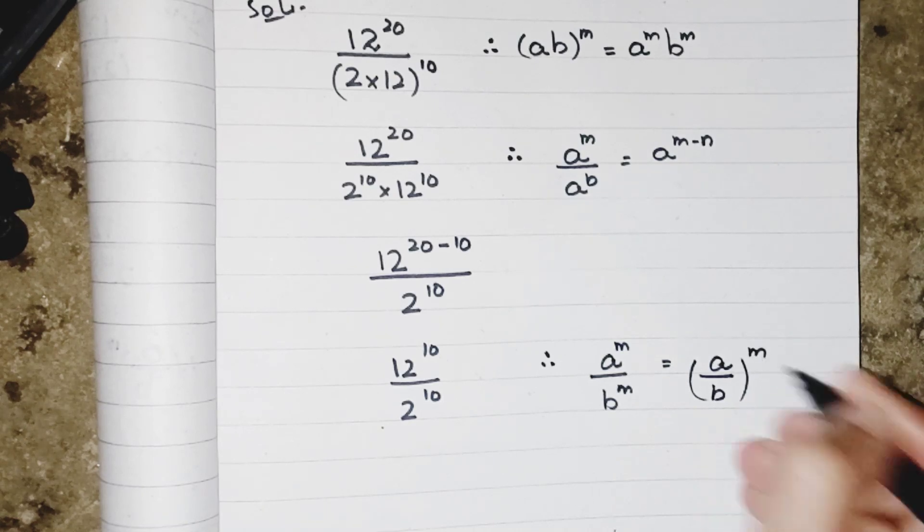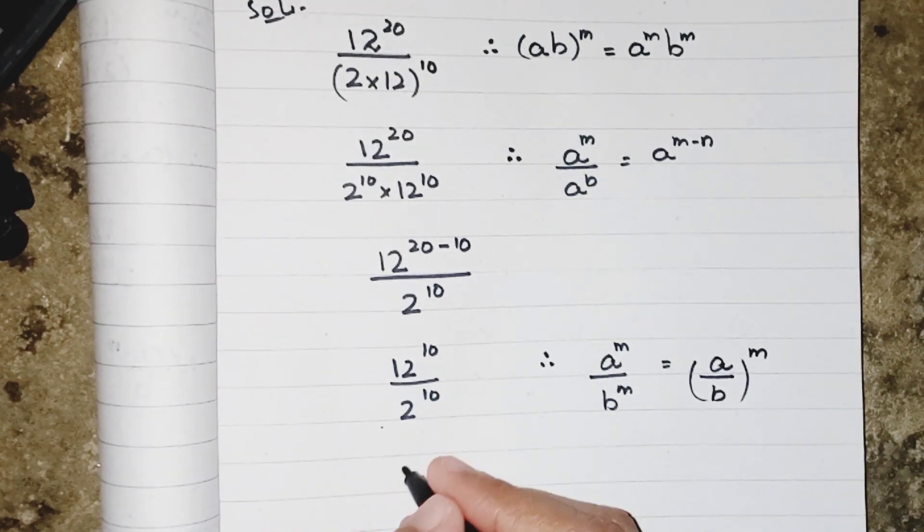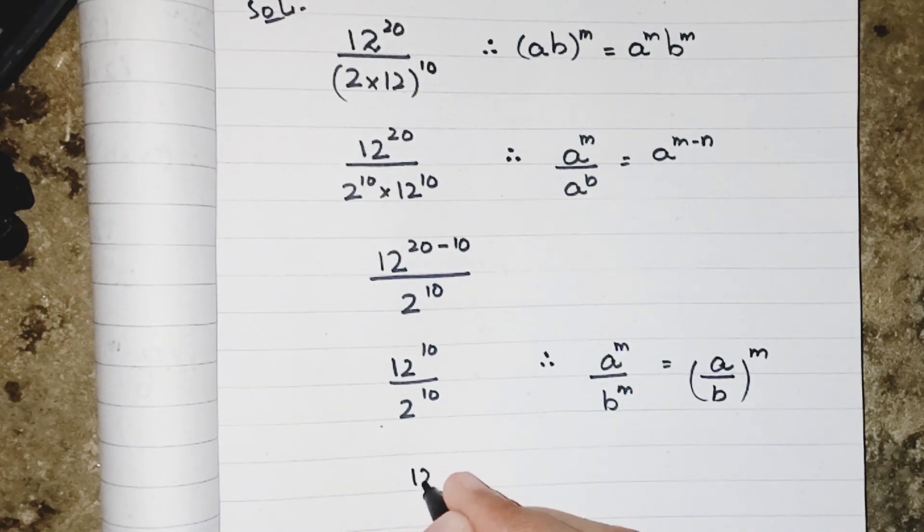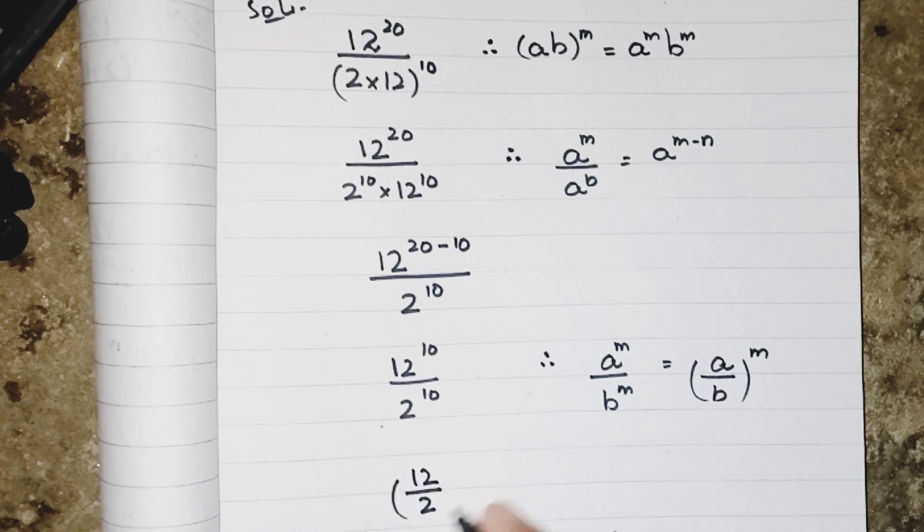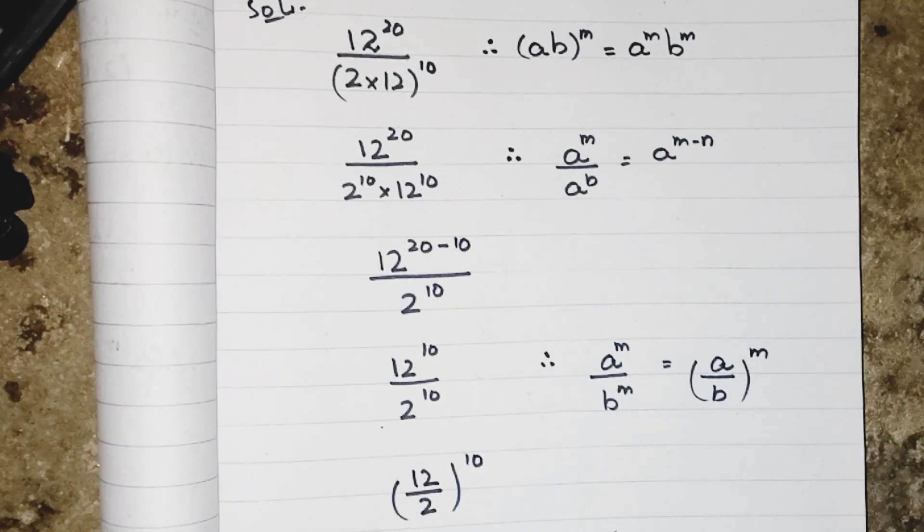So I am writing 12 upon 2 power 10. Both of them are multiples of 2, so both of them will be cancelled out.